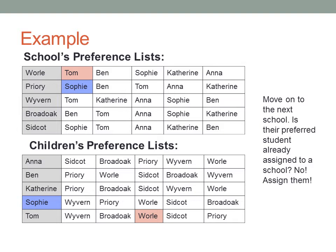We then move on to the next school, Priory. Their preferred student is Sophie. We look at Sophie and find that she has not yet been assigned to a school. We therefore assign her to Priory and again highlight the fields red.